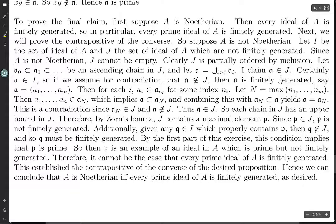Suppose we have an ascending chain in J and let A be the union of these ideals. We need to prove this union is in J — and this is where we'll use the previous fact. Certainly this union is an ideal. Now assume for contradiction that A is not in J, meaning A is finitely generated, say by a₁ through aₘ.